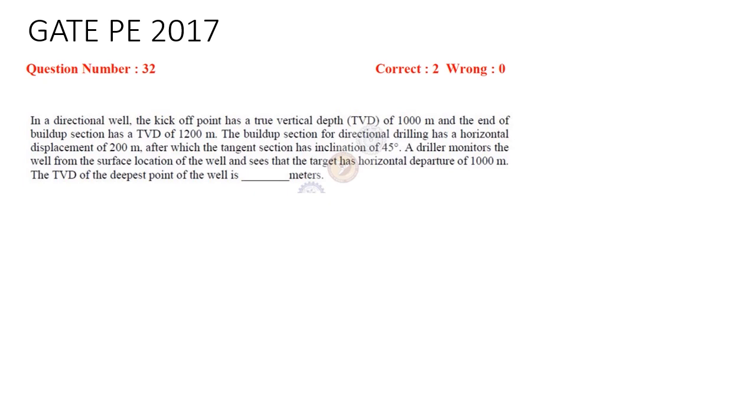This particular question was asked in GATE 2017. In this question, a directional drill has been given. The kickoff point has a true vertical depth of 1000m and the end of buildup section has a TVD of 1200m. The buildup section has a horizontal displacement of 200m, after which the tangent section has an inclination of 45 degrees. The target has a horizontal departure of 1000m. We need to calculate the TVD of the deepest point of the well.